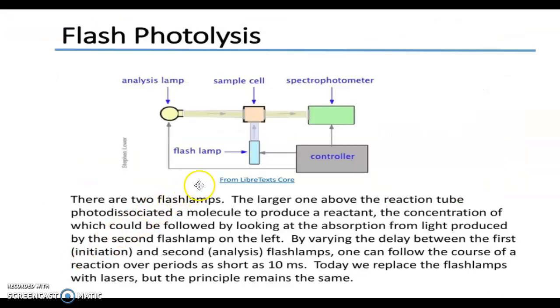The second method is flash photolysis. Here we have an initiator and analysis chambers. We have two flash lamps: this is the analyzing flash lamp, and this is the sample cell in which this is the flash lamp, and this is the spectrophotometer which is required to measure the reaction, and this is the controller.